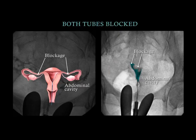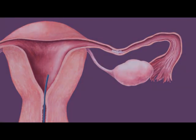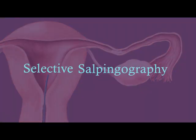In some cases, blockage can occur in both fallopian tubes. Notice that the dye will remain within the endometrial cavity. When the blockage is confirmed, a selective salpingography can be performed.